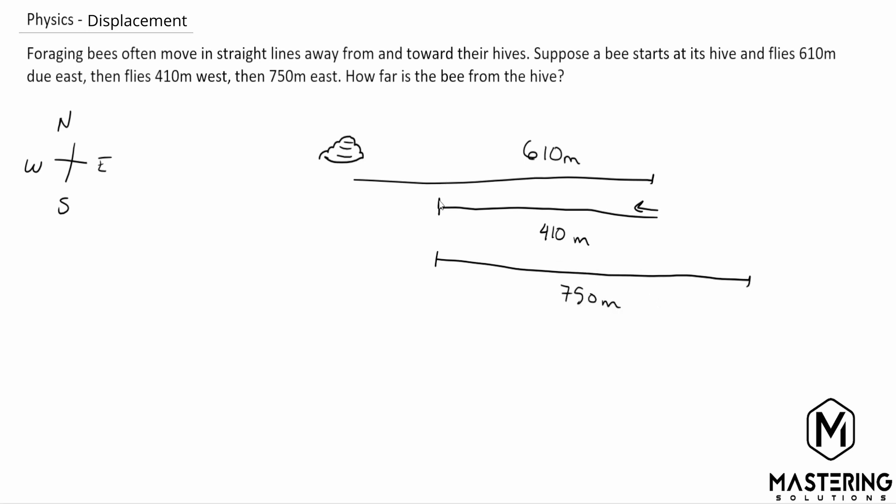750 meters east. And then they want to know how far is the bee away from the hive. So let's just take it one step at a time. Let's go from 610 back the 410.